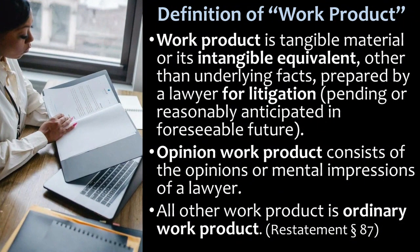Let's start with our basic definition. If you're looking for extra background reading, probably the most authoritative place to go is the Restatement of the Law Governing Lawyers, section 87, which is where I'm drawing some of this content from. Work product is tangible material or its intangible equivalent, but not the underlying facts themselves. The material has to be prepared by a lawyer or someone for litigation, and the litigation can be pending, already filed, or reasonably anticipated in the foreseeable future. There are two types: opinion work product, which consists of the opinions or mental impressions of a lawyer, and everything else — ordinary work product.